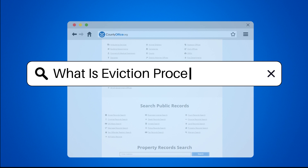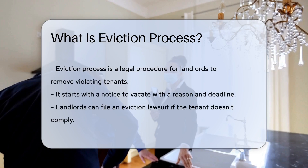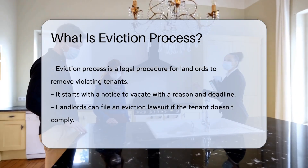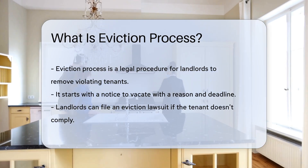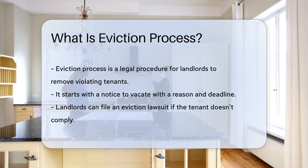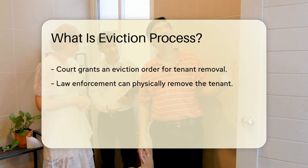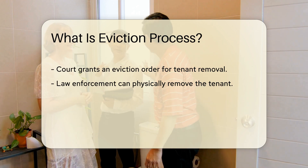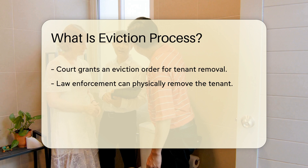What is the eviction process? The eviction process is a legal procedure landlords follow to remove tenants who violate the terms of their lease agreement. It typically starts with the landlord serving the tenant with a notice to vacate, stating the reason for eviction, and a deadline to move out. If the tenant does not comply, the landlord can file an eviction lawsuit in court to obtain a court order for the tenant's eviction.